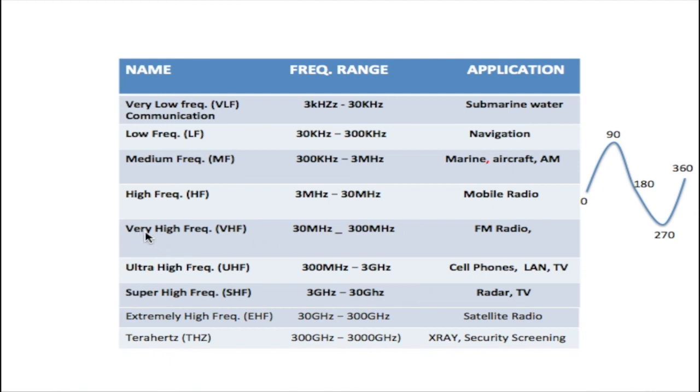The very high frequency, VHF, between 30 megahertz and 300 megahertz is used for FM radio. Now, this VHF band used to be used for TV services back in the early days as well.